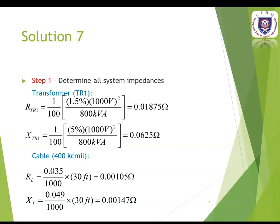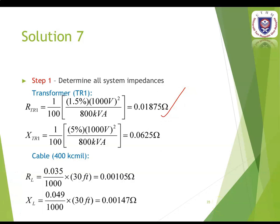For transformer TR1, using the equation 1 over 100 times resistance or reactance, times secondary line voltage squared, divided by apparent power, you can get the resistance and reactance. Remember to use the secondary voltage or the low voltage side. The resistance is 0.0175 ohms and the reactance is 0.0625 ohms.